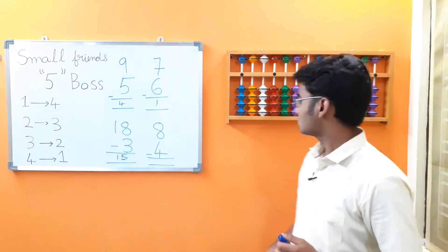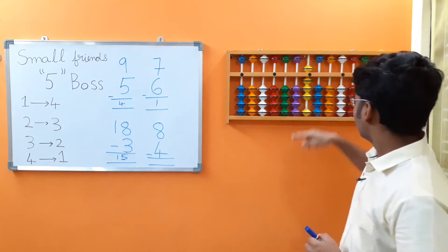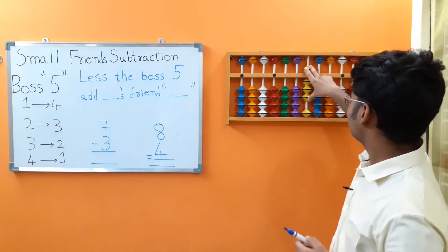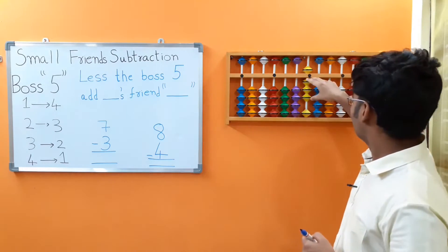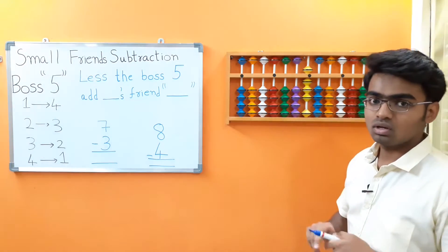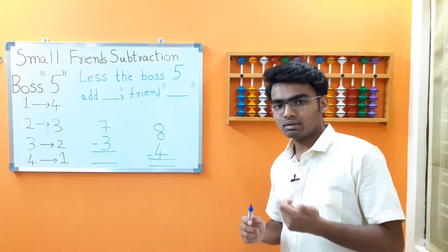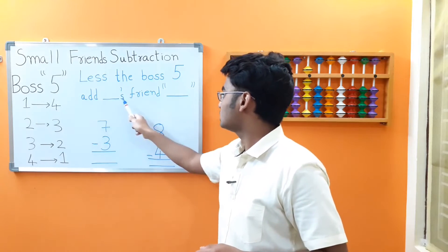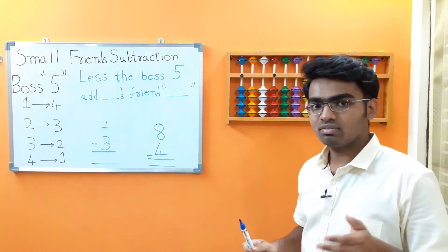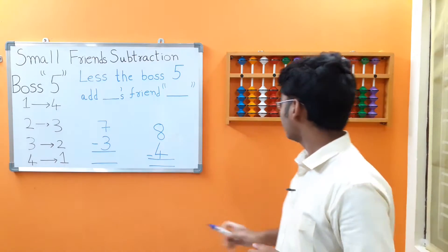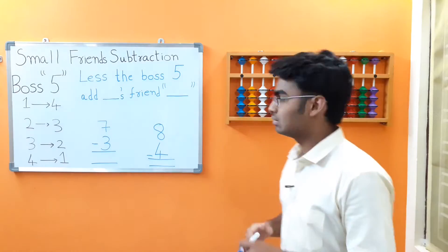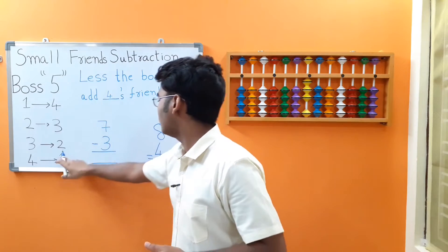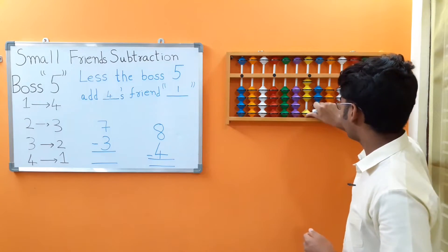Now 8 minus 4. Let's place 8 on the abacus. We have to subtract 4, but we only have 3 beads here, so we cannot subtract 4 directly. We have to make use of the small friends concept. In small friends subtraction, it is very similar to addition but only the statement changes. The statement in subtraction is: less the boss 5, add the friend. In addition it was: add the boss 5, less the friend. Now, 4's friend is 1. Following the rule — less the boss 5, add 4's friend 1 — we are adding 1 here. We got the answer as 4.